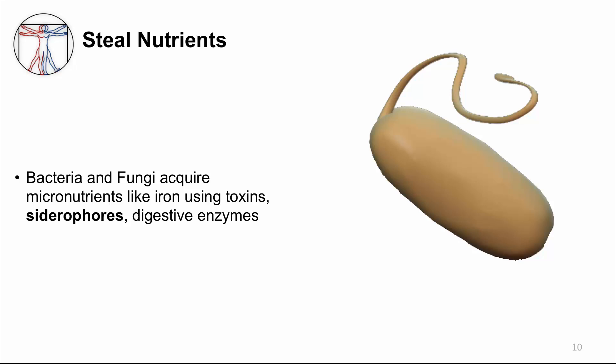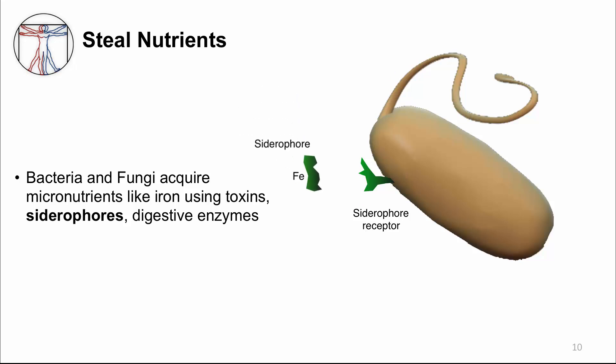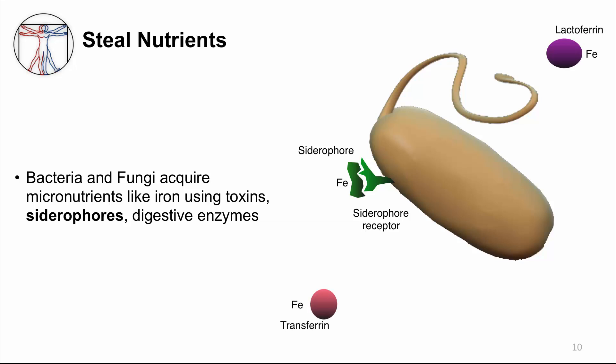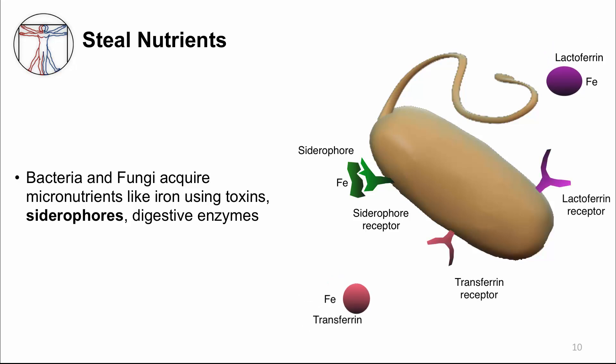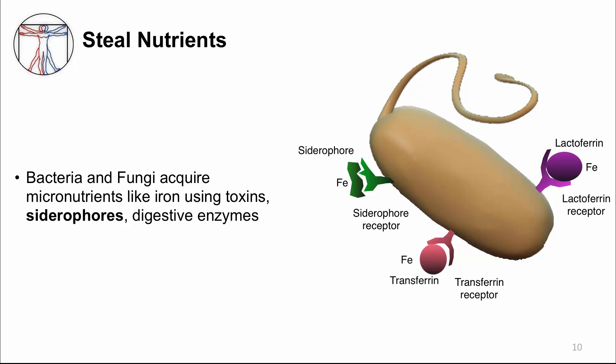Bacteria can produce molecules like siderophores and siderophore receptors. Siderophores bind iron tightly and steal the iron from the host, and siderophore receptors can then take up the iron. The host can produce lactoferrin and transferrin, which also bind iron tightly to prevent microbes from getting it. Because of this, some bacteria will even make receptors to lactoferrin and transferrin in order to steal more iron from the host.